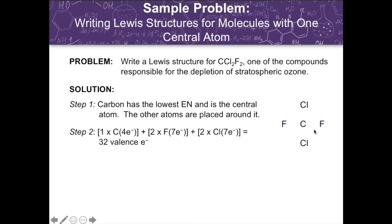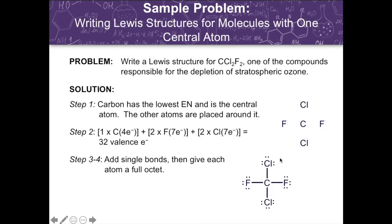We draw the single bonds first to the central atom and subtract 2 electrons for each bond. From 32, we subtract 8 electrons since we used up 4 bonds representing 8 electrons, leaving 24 electrons remaining. We then distribute the 24 remaining electrons in pairs beginning with the surrounding atoms so that each atom has an octet. Each surrounding fluorine and chlorine atom gets 3 pairs, and the remaining 24 electrons have been used up.